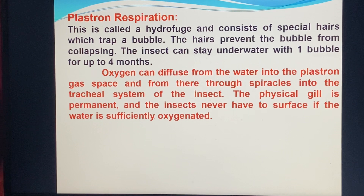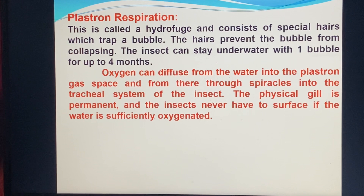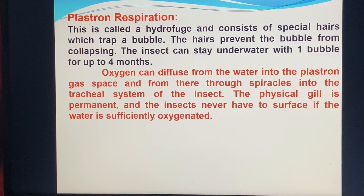This is called a plastron, also called a hydrophil respiration. It consists of a pile of hairs which trap a bubble. The air prevents the bubble from detaching. The insect can stay underwater with a bubble for up to four days. Oxygen can diffuse from the water into the plastron, and from there through a spiracle into the tracheal system of the insect. The physical gill is permanent and the insect never has to surface.